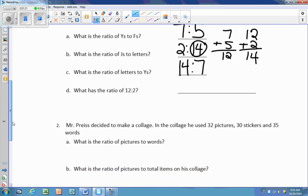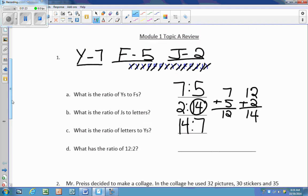Letter D, what has the ratio of 12 to 2? Well, we're going to go back up to our data and we're going to look at it and say to ourselves, which two numbers are going to give us the 12? And if you look, the 7 for the Y and the 5 for the F can give you 12. So it's going to be F and Y, and then the J's because that's the number 2.